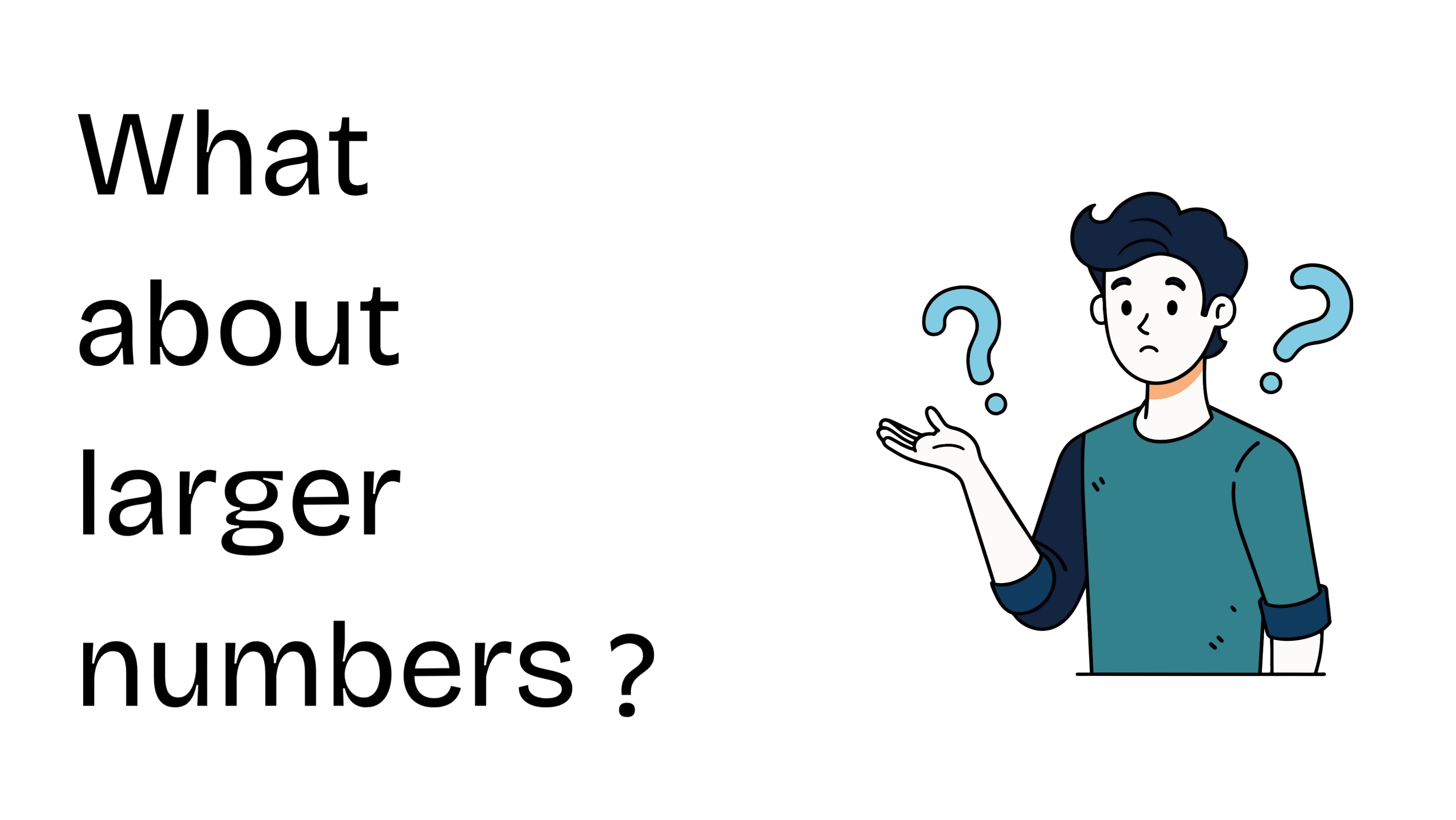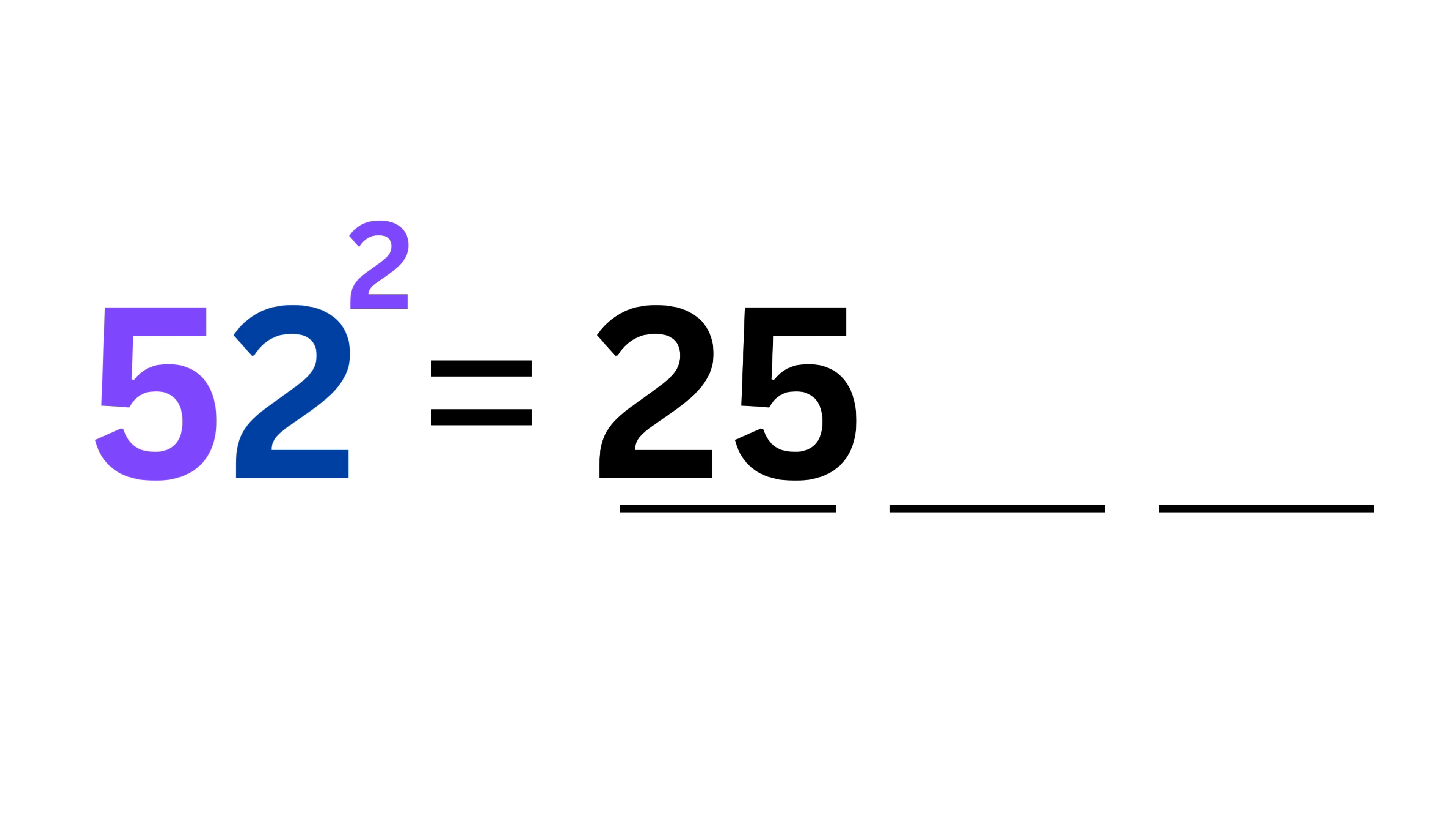But what happens with larger numbers? Let's try 52 squared. Left side, 5 squared is 25. Right side, 2 squared is 4. Middle step, 5 times 2 is 10. Doubled is 20.